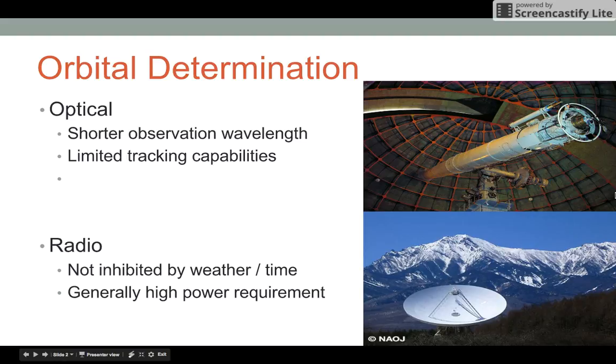In orbital determination you have optical telescopes and you have radio telescopes. Optical telescopes observe a shorter wavelength which give higher or more precise results. However, it's limited in its tracking capabilities as it's limited by weather and it can only be used at night.